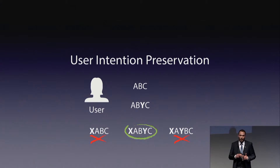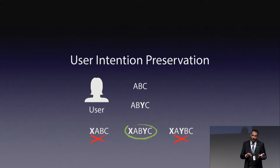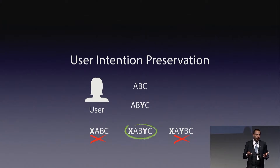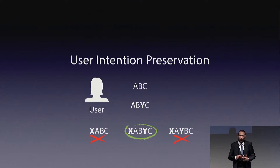User intention preservation expresses that after some edits, the initial intent — for Y to be between B and C — is preserved. On the left side for example, we can see that the Y disappeared: user intention was lost. On the right side, the Y is there but it is not between B and C — user intention was lost again.